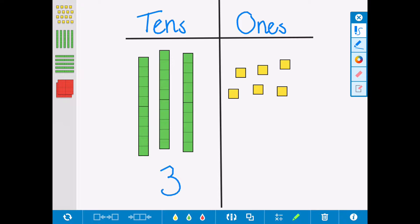The three goes here to represent the three tens, which is thirty, and the six to represent the six ones. So in total we have thirty-six.